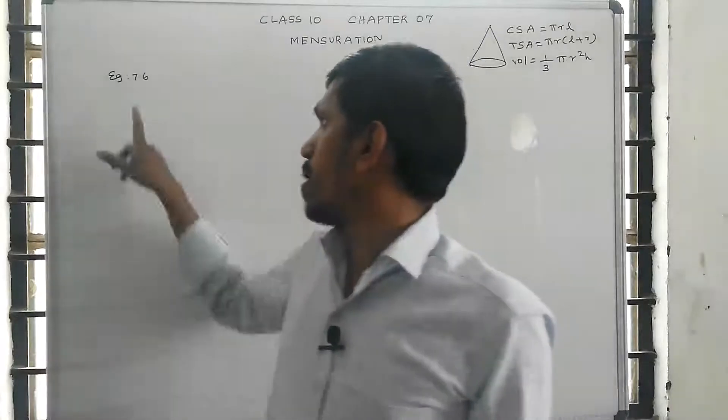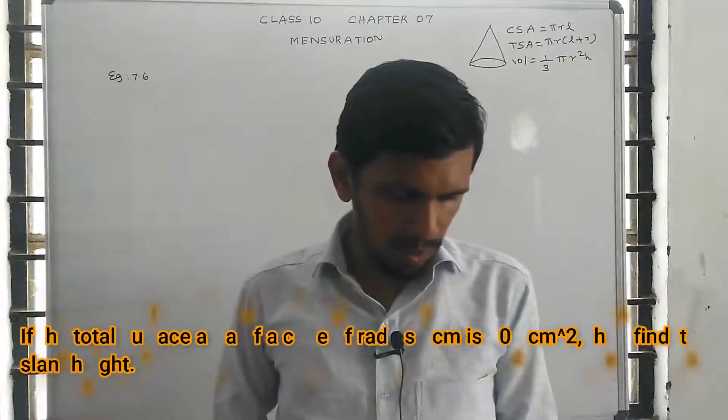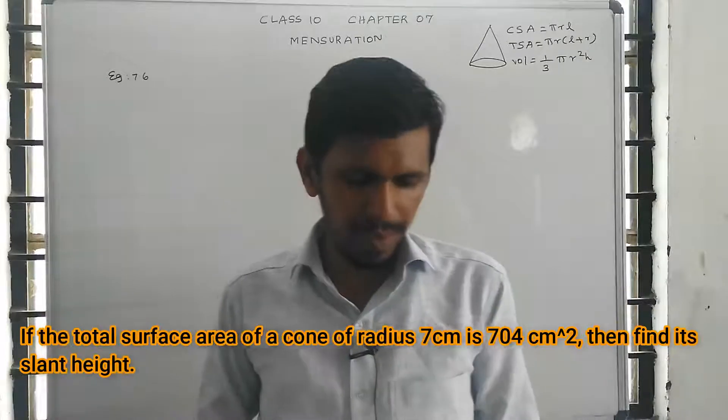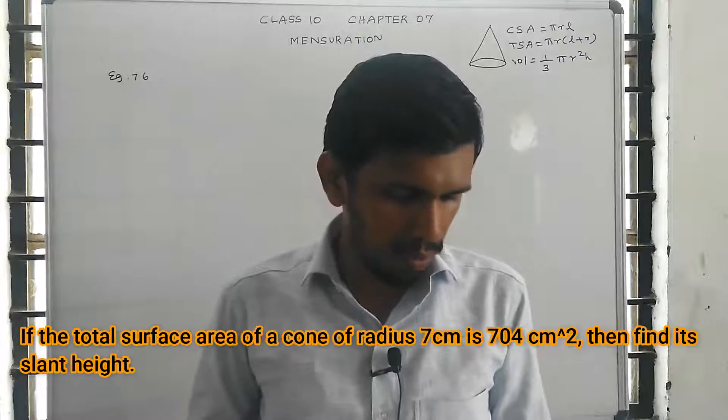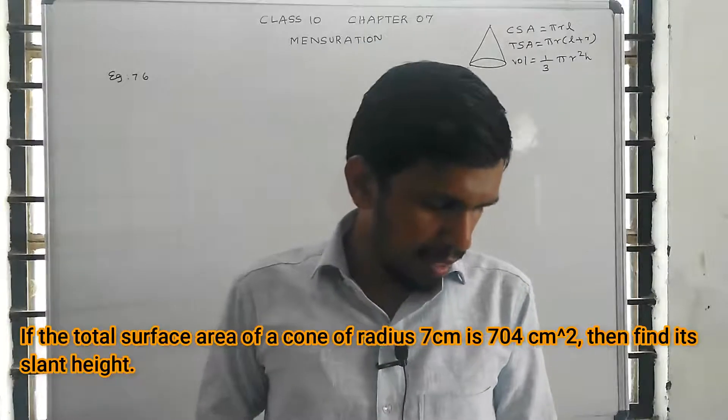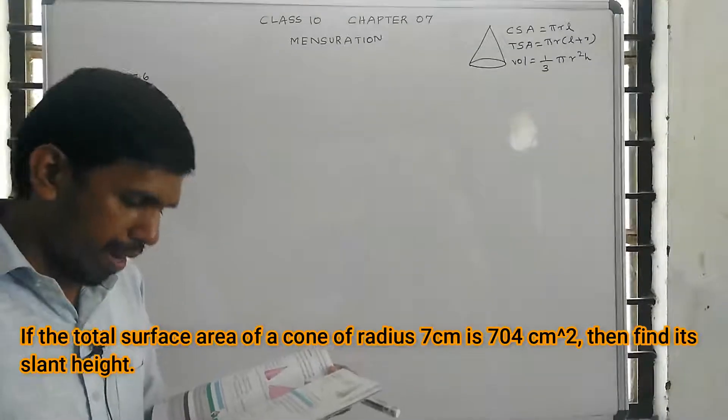Assalamualaikum students, Example 7.6: If the total surface area of a cone of radius 7 centimeter is 704 centimeter square, then find its slant height. So what the question is asking for is the total surface area and radius are given, find the slant height.